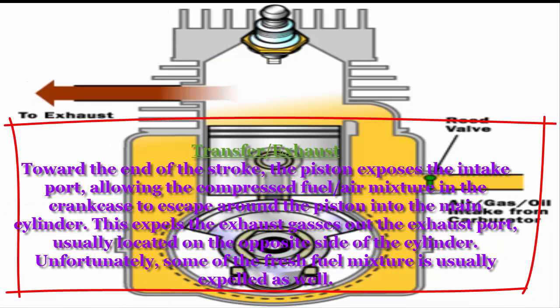Transfer/Exhaust: Toward the end of the stroke, the piston exposes the intake port, allowing the compressed fuel-air mixture in the crankcase to escape around the piston into the main cylinder. This expels the exhaust gases out the exhaust port, usually located on the opposite side of the cylinder. Unfortunately, some of the fresh fuel mixture is usually expelled as well.